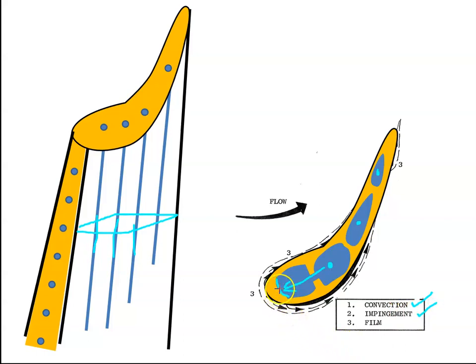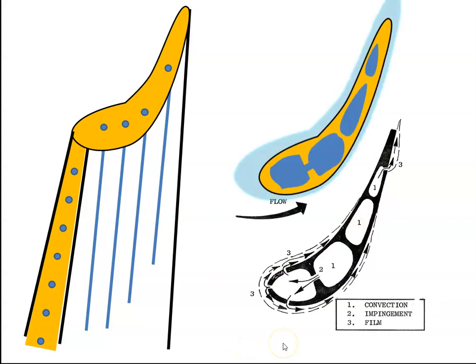Then there are little holes along here. The air comes up and through these little holes into the chamber — we call that impingement cooling.